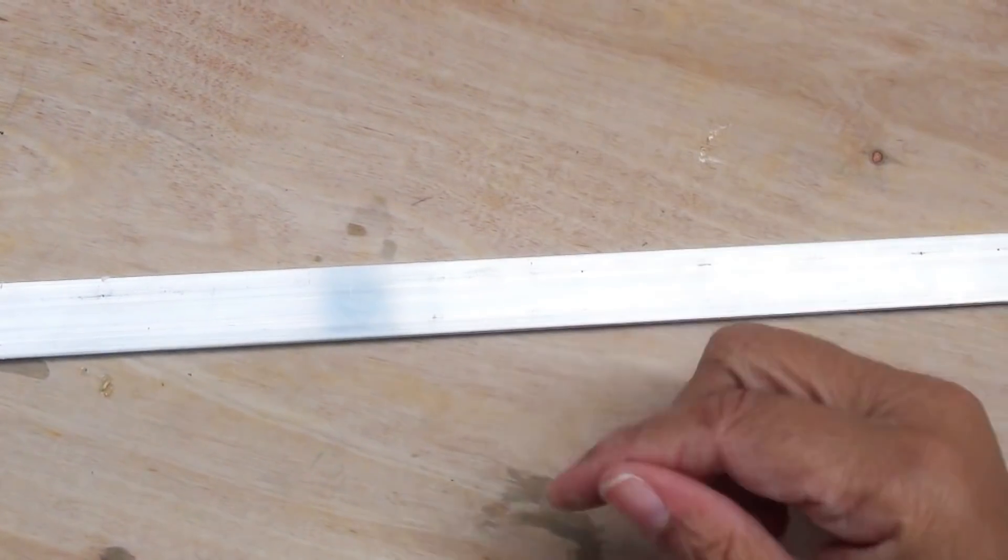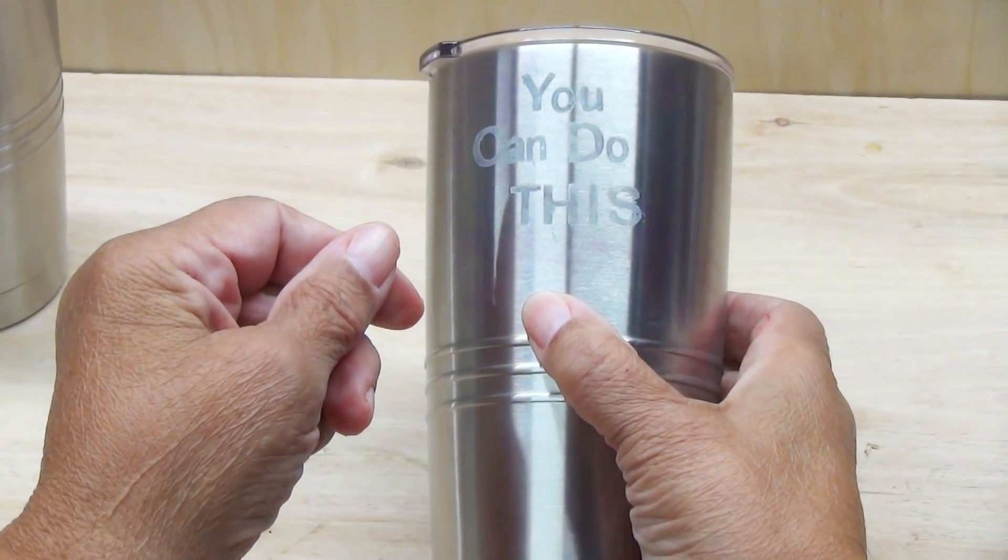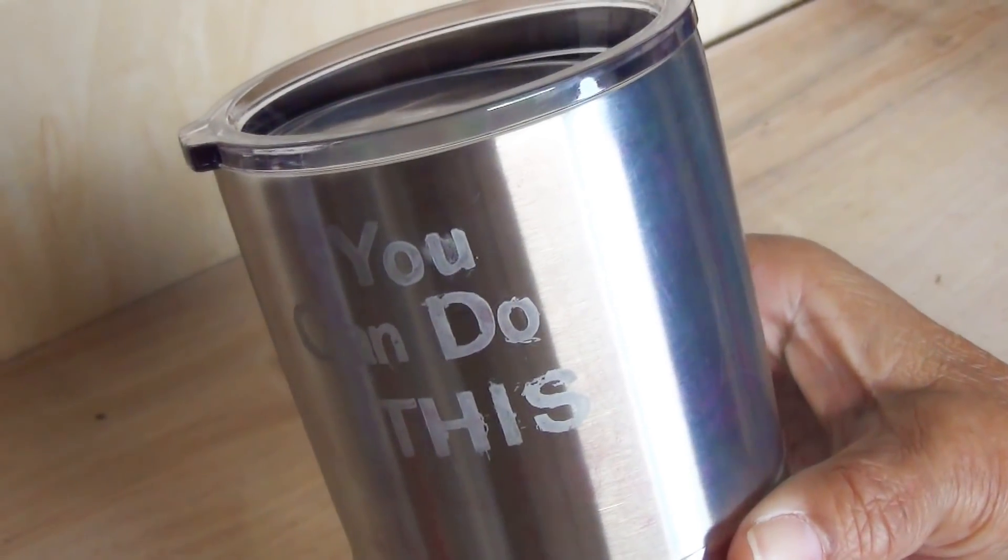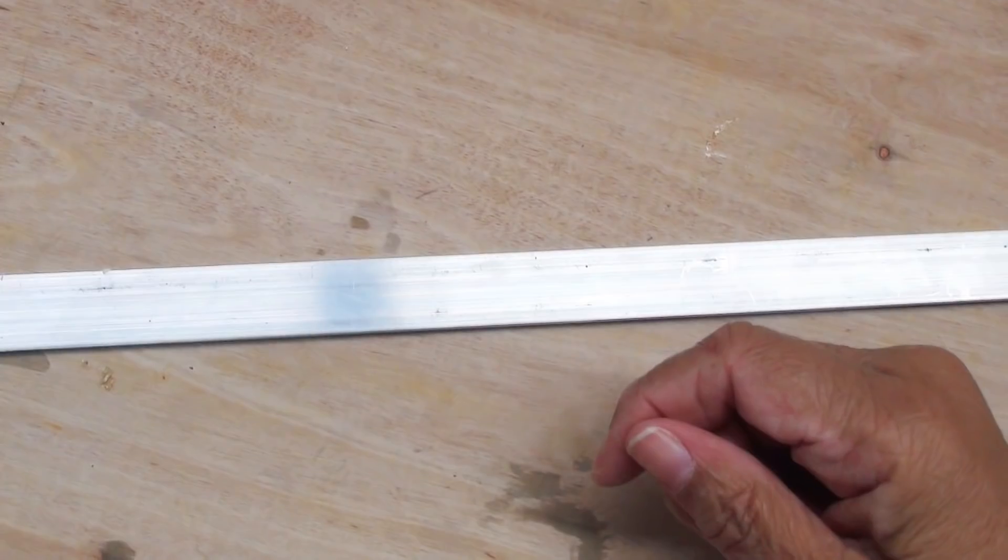And you want to test it out first to make certain that you're comfortable with the process before you commit to the item that you're going to etch. Because once it's etched, that's it. You can't take it back. So just play around first on a scrap piece of metal.